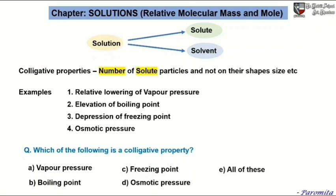Our answer will be D. A, that is vapor pressure, is not a colligative property. Relative lowering of vapor pressure is a colligative property. B: boiling point — boiling point cannot be a colligative property, but elevation of boiling point is a colligative property.